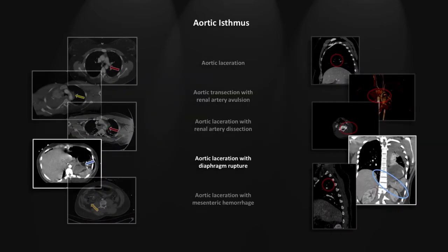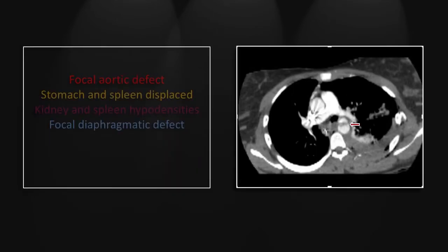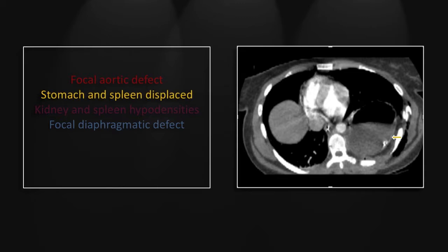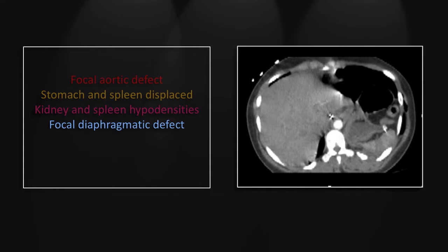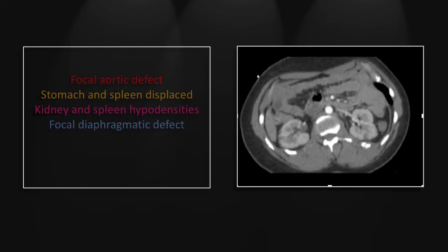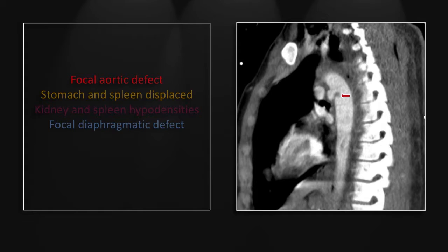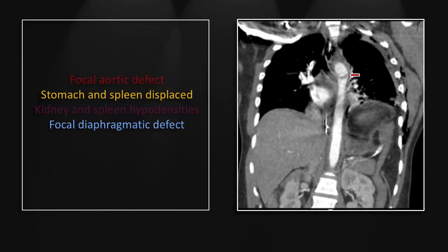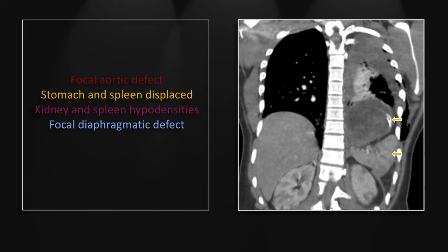Our next case is an aortic laceration with rupture of the left hemidiaphragm. You can see here the irregular defect in the aorta and here the herniated stomach lying in the inferior left hemithorax. The spleen has a well-circumscribed peripheral wedge-shaped hypodensity suggesting a thromboembolic event, and there is a defect in the anterior aspect of the left hemidiaphragm. The kidneys demonstrate the now familiar wedge-shaped cortical hypodensities again consistent with a proximal vascular injury and thromboembolism. There on the sagittal the intimal flap and pseudoaneurysm are more than obvious. Here on the coronal the intimal flap and the herniated colon and stomach and the free edge of the torn left hemidiaphragm. A cut further back shows herniated stomach and spleen — the spleen is rotated and almost appears inverted, lying above the torn edge of the hemidiaphragm.